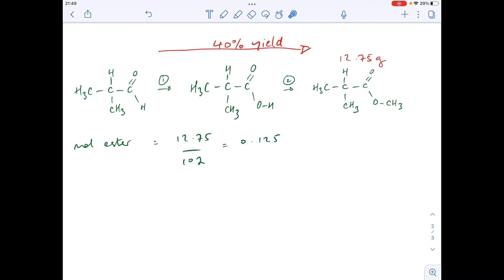So we need to scale up the moles of aldehyde to account for the 40% yield. The way we do that is divide by the yield multiplied by 100. There's the calculation there. You can see we're going to need 0.3125 moles of the aldehyde.